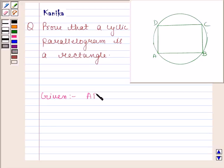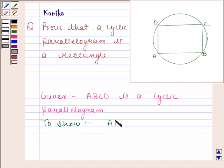Given: ABCD is a cyclic parallelogram. To prove: ABCD is a rectangle.